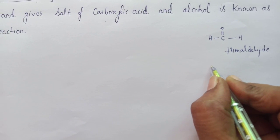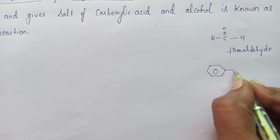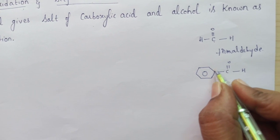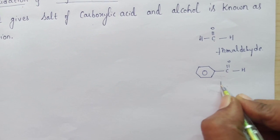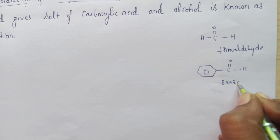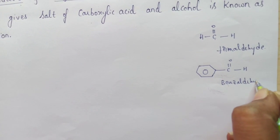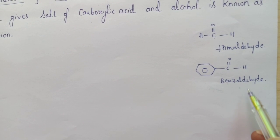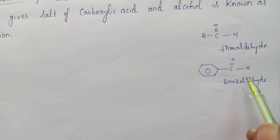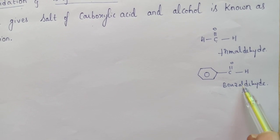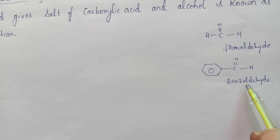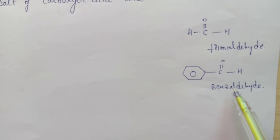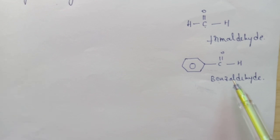For an aromatic aldehyde, the best example is benzaldehyde. This is the structure of benzaldehyde — it also does not possess any alpha hydrogens. Both formaldehyde and benzaldehyde are examples of aliphatic or aromatic aldehydes without alpha hydrogens. In the Cannizzaro reaction, these two molecules undergo self-oxidation and reduction in the presence of a base like NaOH, giving a salt of carboxylic acid and an alcohol.